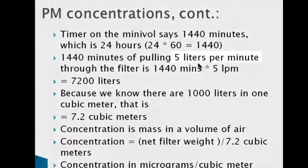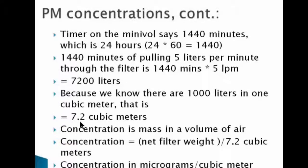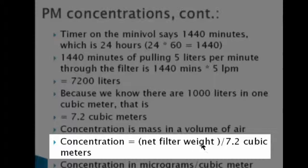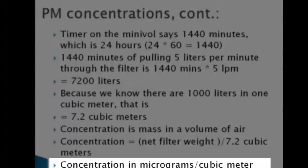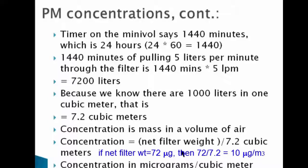If your device ran at 4.5 liters per minute or something, you would come up with a little less than 7.2 cubic meters — and your result is going to be a little bit low. Concentration is the mass in a volume of air. So take the net filter weight from the lab, convert it to micrograms, and divide by 7.2 cubic meters. This gives you your result in micrograms per cubic meter. For example, if the lab comes back at 72 micrograms net filter weight, divided by 7.2 gives us a concentration of 10 micrograms per cubic meter.